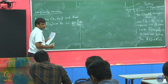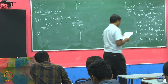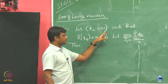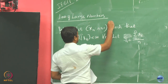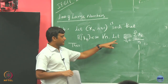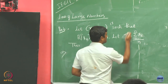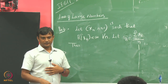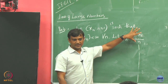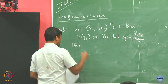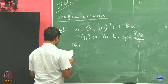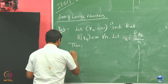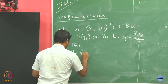Then we have the following results. Let x_n, for n greater than or equal to 1, be such that the expectation of x_n is finite for all n. We define x_n bar to be the summation of x_i for i running from 1 to n, divided by n. So this is the average of the first n terms.